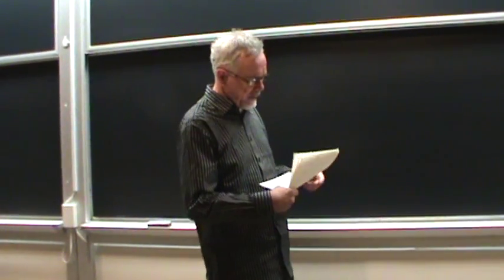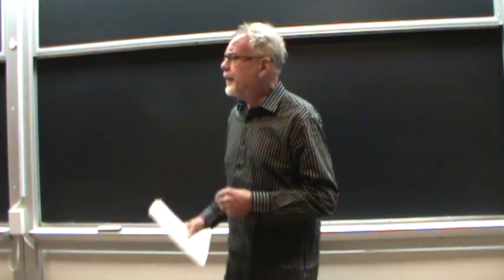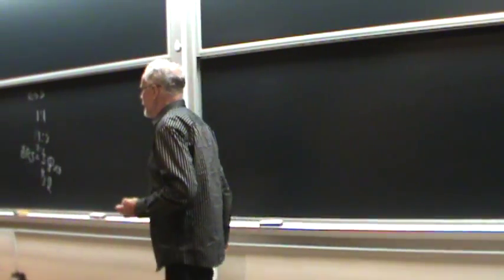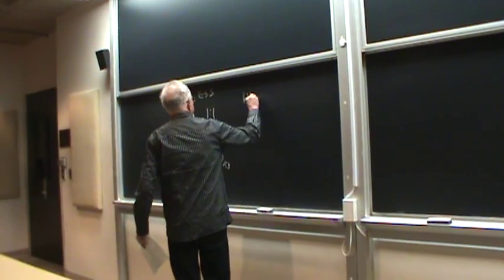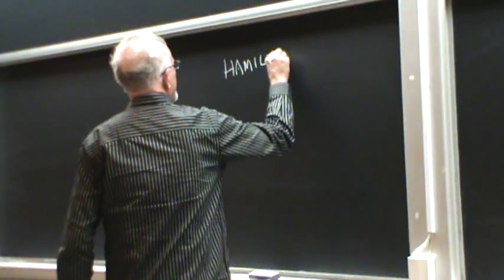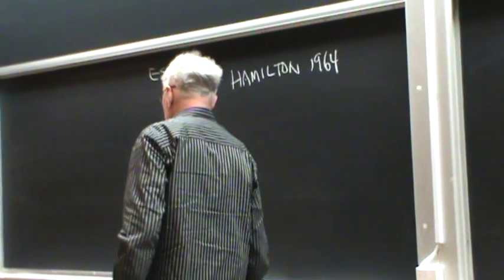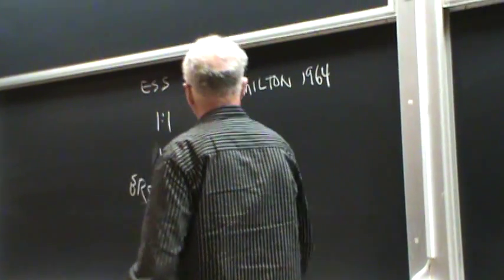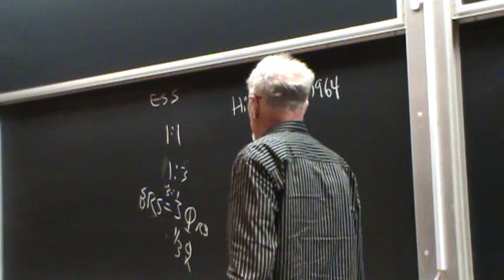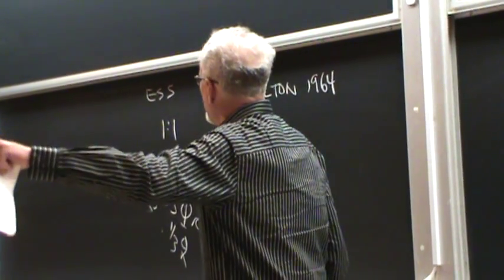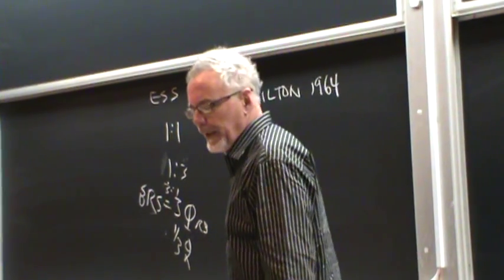Now, by logic, though, we're not only related to our children. So, it was Hamilton's advance in 1964 to extend this system and say, wait a second, you're equally related to your full sibs, your brothers and your sisters, under upbringing this is, as you are to your own children. So, in principle, natural selection can favor you having no surviving offspring if, by doing so, you add more brothers and sisters to the world than children you would have had.